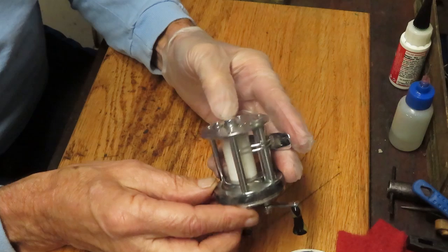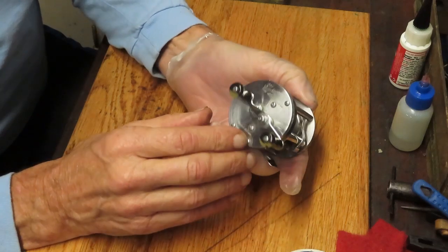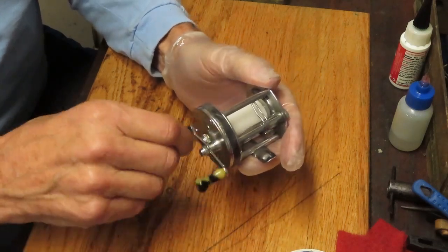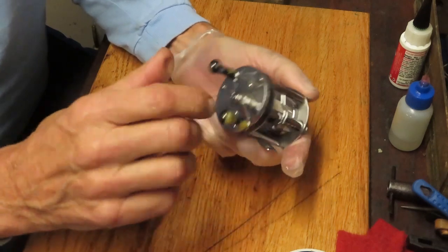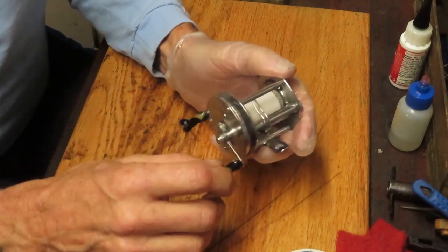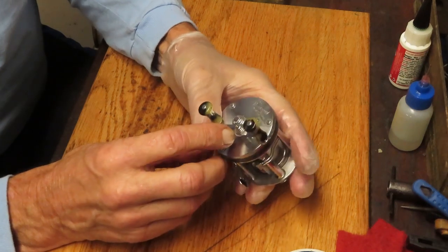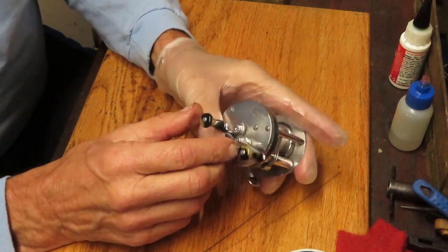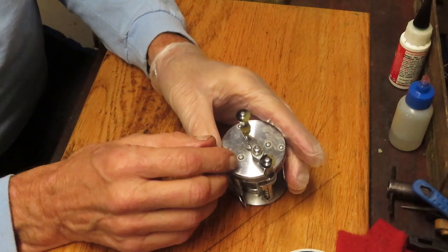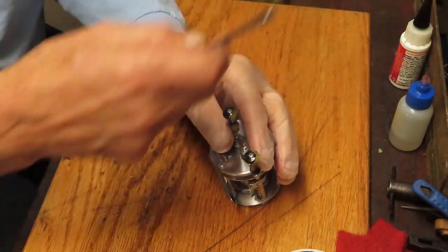This one looks like a beautiful example of a Shakespeare reel in wonderful condition. Oh, and a reel that probably hasn't seen any oils or greases in a while. We're going to take this reel apart, I'm going to show you how it's made and how to service it, how to keep it fishing for a long time to come.